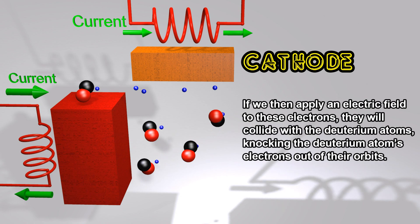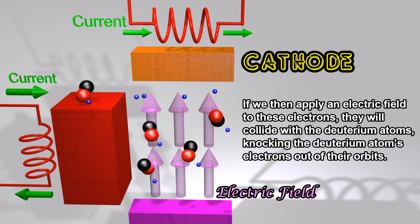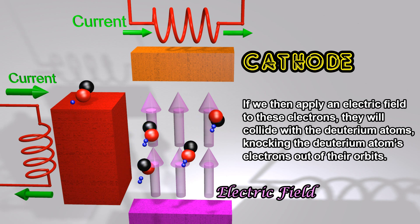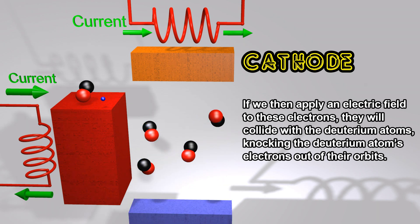If we then apply an electric field to these electrons, they will collide with the deuterium atoms, knocking the deuterium atoms' electrons out of their orbits.